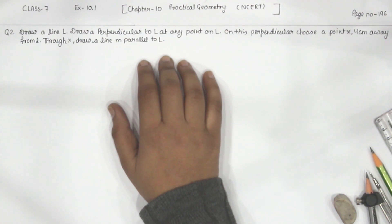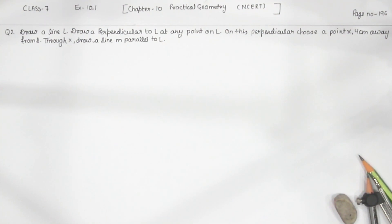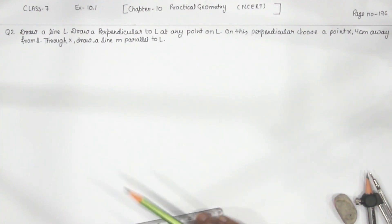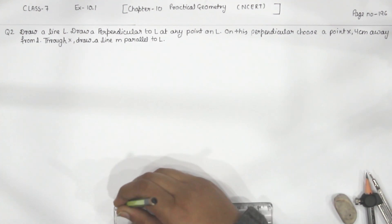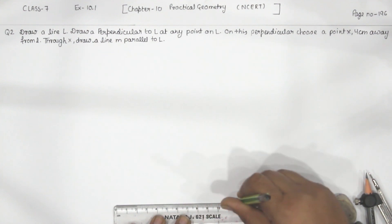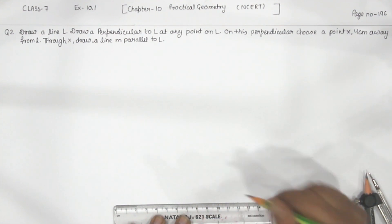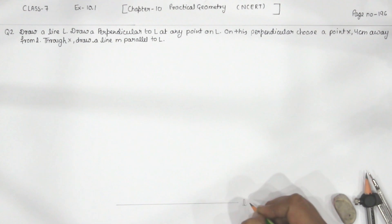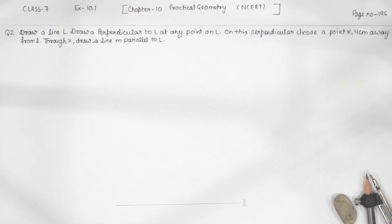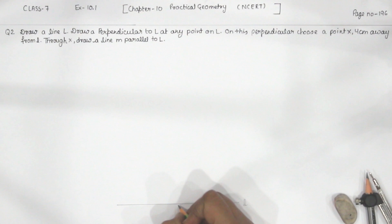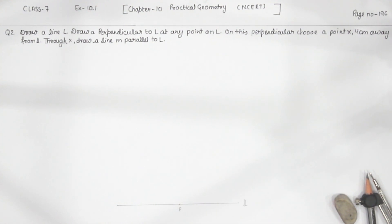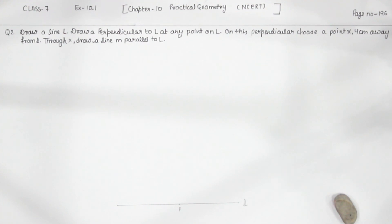So first of all, we are going to draw a line segment L. This is the line segment L. Now we have to draw a perpendicular. For that, we are going to take any point P on the line segment L. Now this is the point P. Now we are going to draw a perpendicular on the line segment L from the point P.